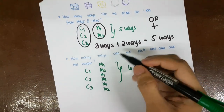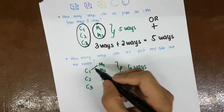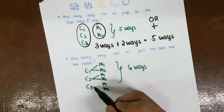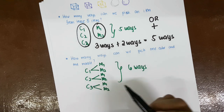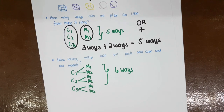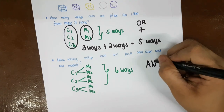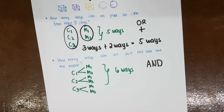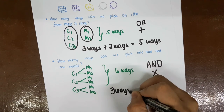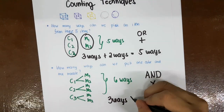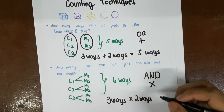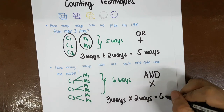The six combinations are: C1 and M1, C1 and M2, C2 and M1, C2 and M2, C3 and M1, C3 and M2. Notice I kept saying 'and,' so you just have to multiply. Three ways — the three cubes — times two ways — the two marbles — equals six ways. If you encounter 'and,' you just multiply.